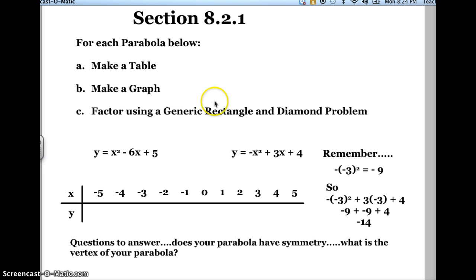Now when you make a table, I want your x values to go from negative 5 all the way to positive 5. And if you graph this correctly, you should have a parabola for both of these. A parabola is kind of a U or a V-shaped type of graph, and it can either open up or down.